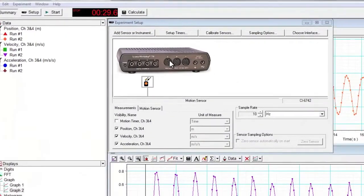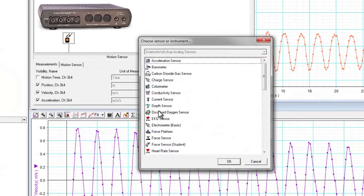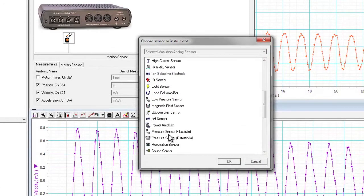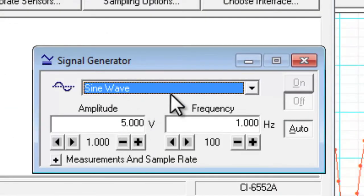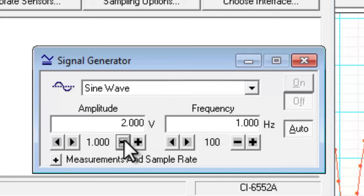In Data Studio, select channel A and set power amplifier as your instrument type. This will open up the signal generator menu which you will use to set up the voltage and frequency of the signal. The voltage determines the amplitude given by the speaker and the frequency sets its frequency of oscillation.